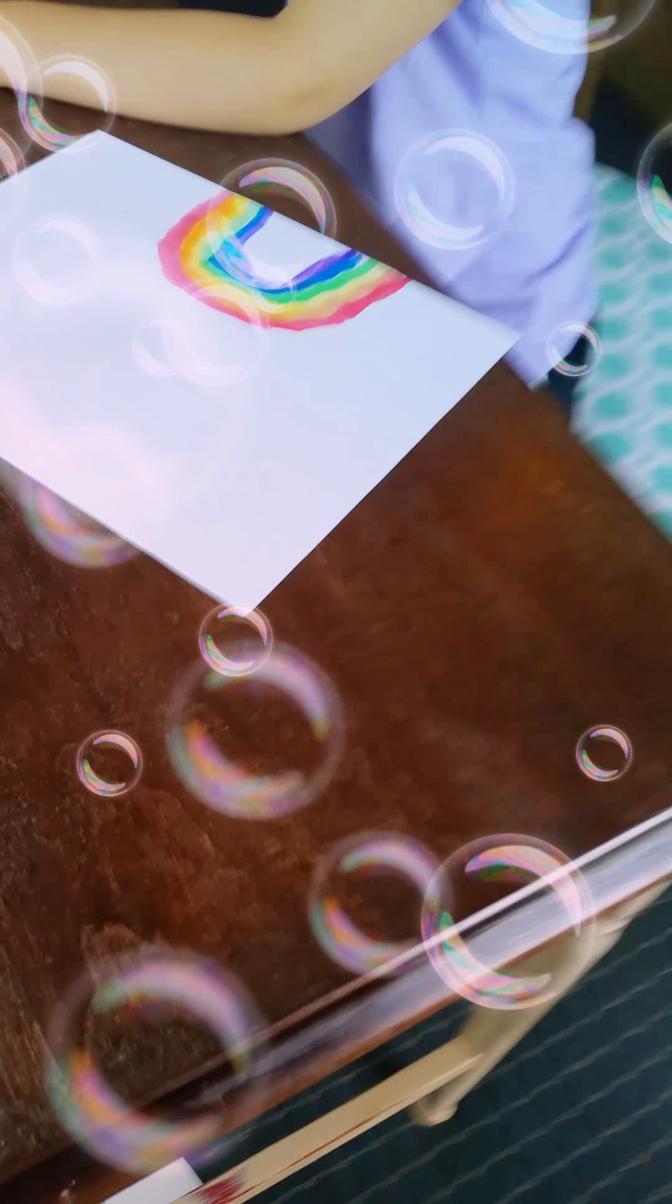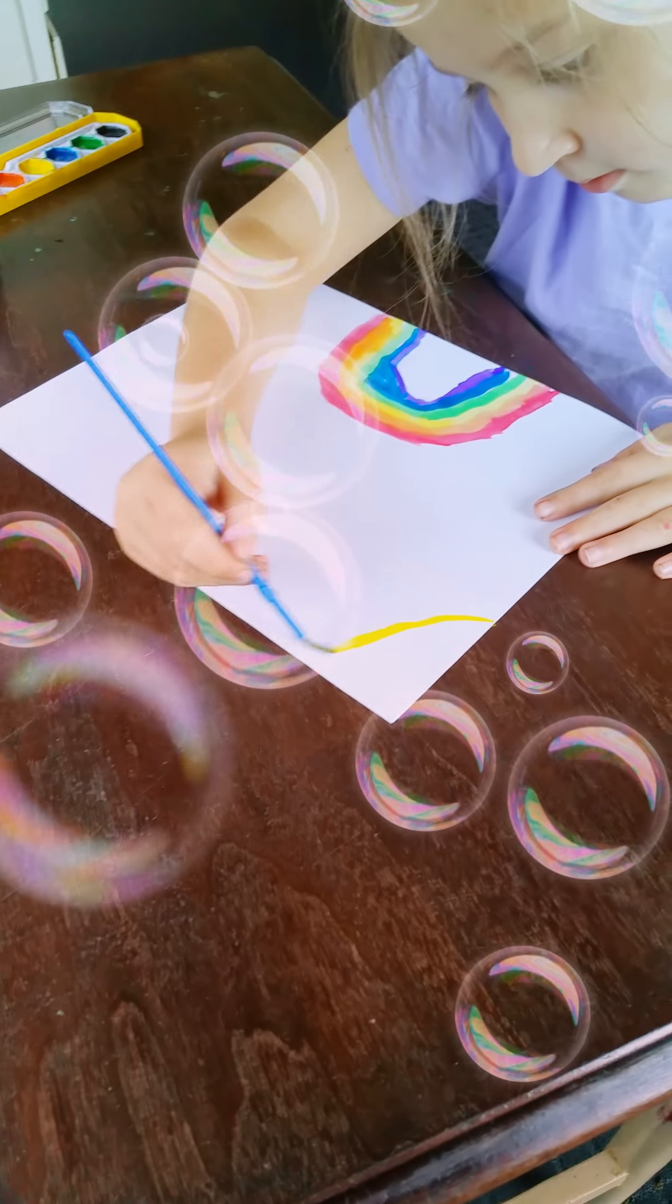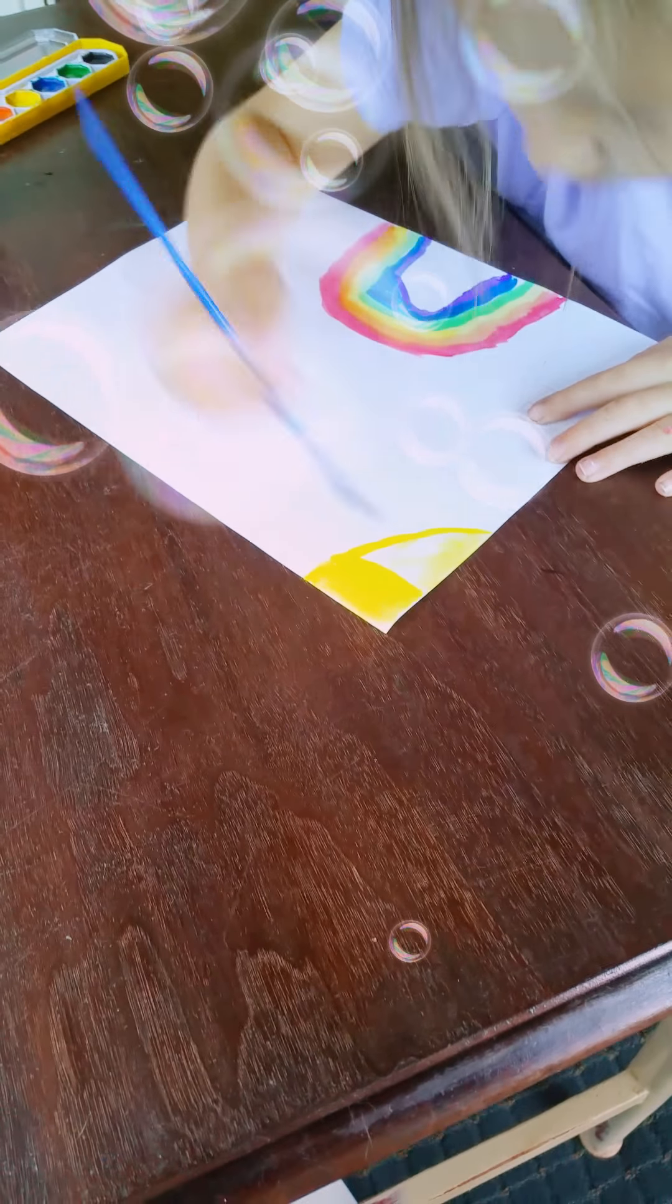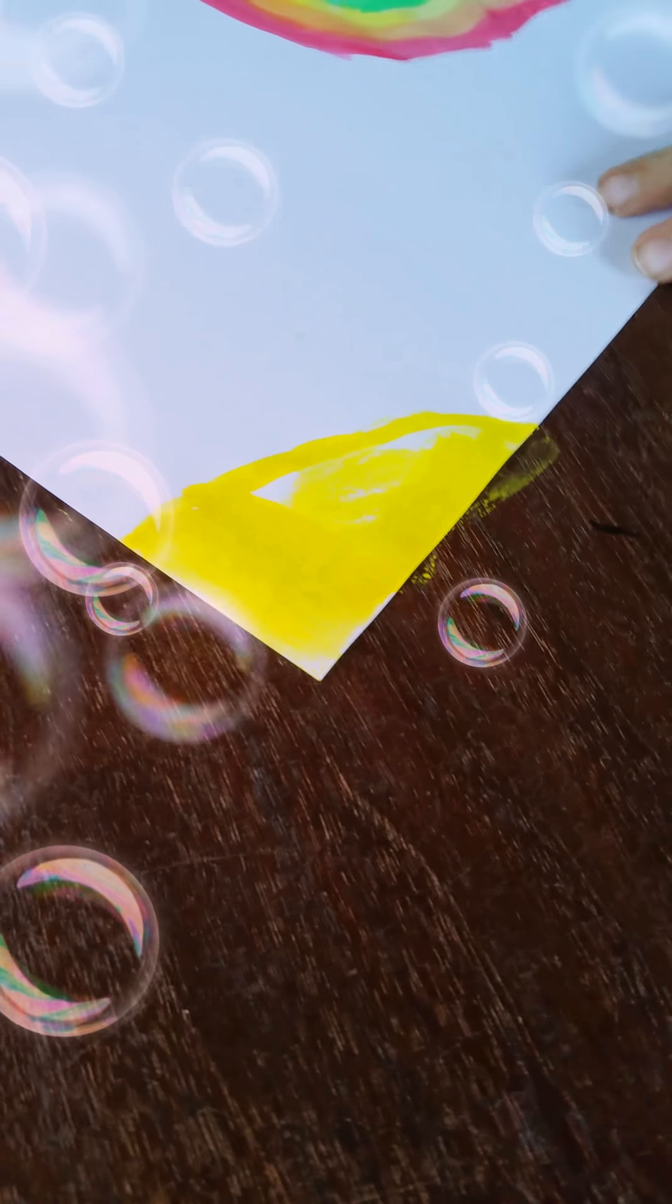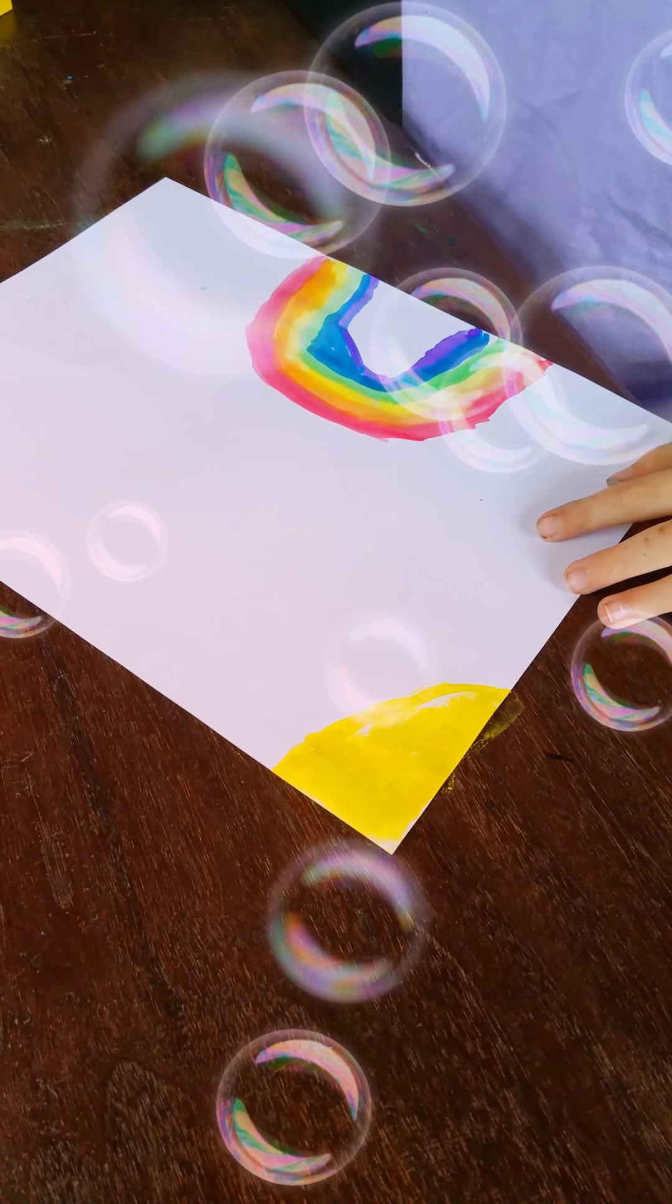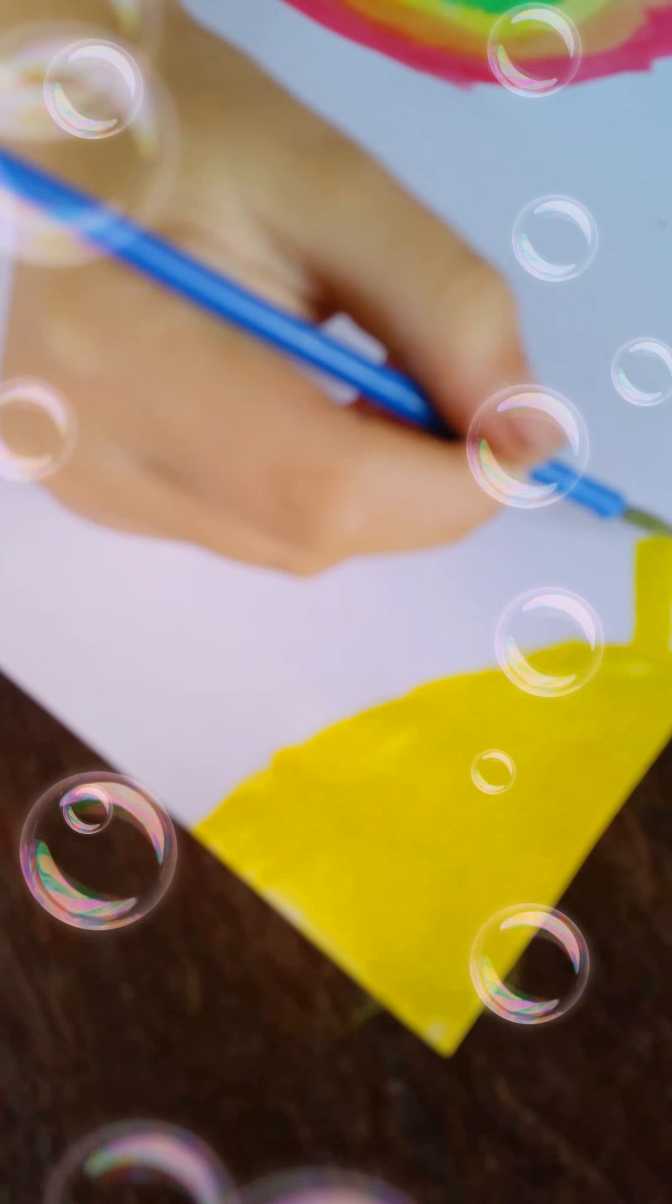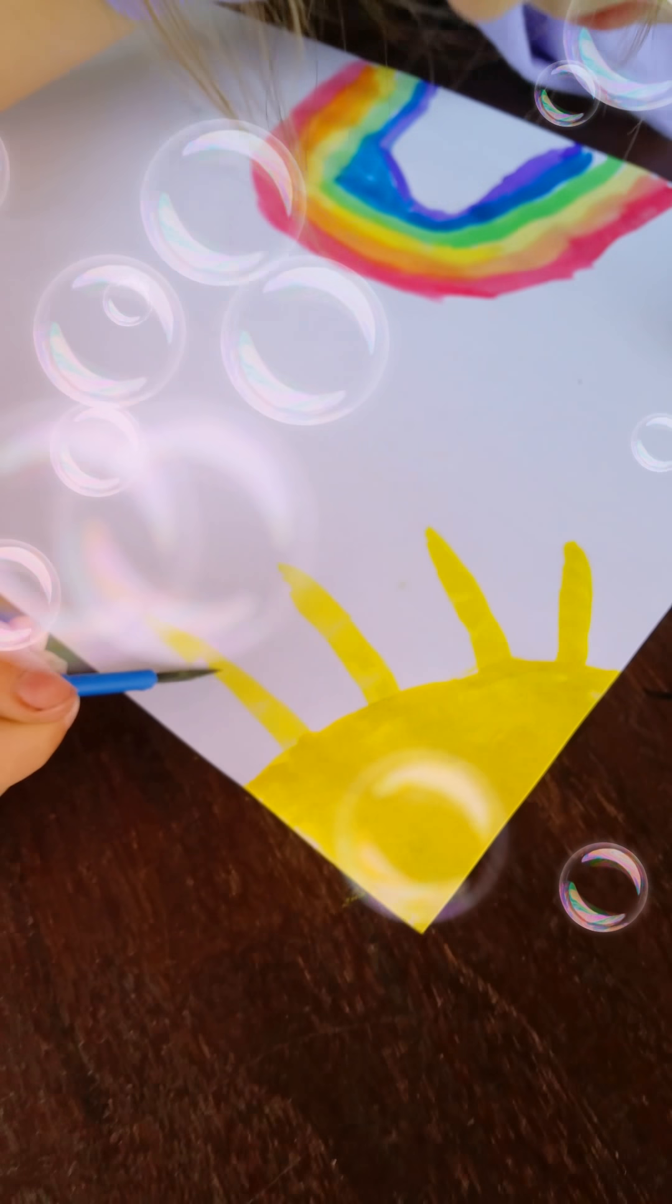And then you're ready for the sun. You're gonna get your yellow, paint it around. Make the sun kind of darkish. And then some more yellow, big line, big line, big line, and big line.